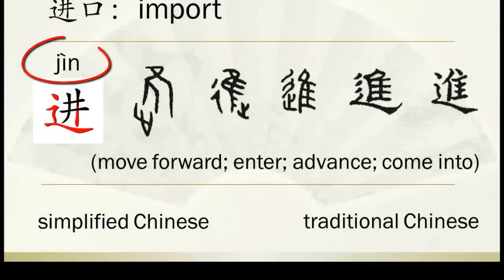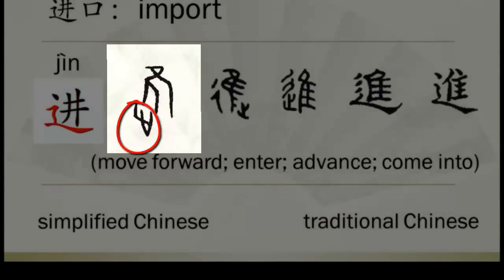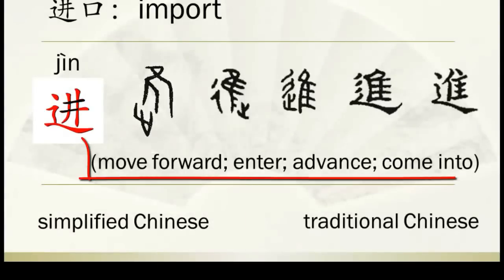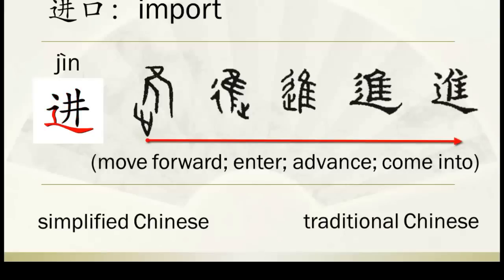Let's look at 进's pinyin — it's the fourth tone, so it's jìn. In the jiaguwen, the upper part is a bird and the lower part is a fish. Together they mean moving forward, with the extended meaning of enter, advance, come into.